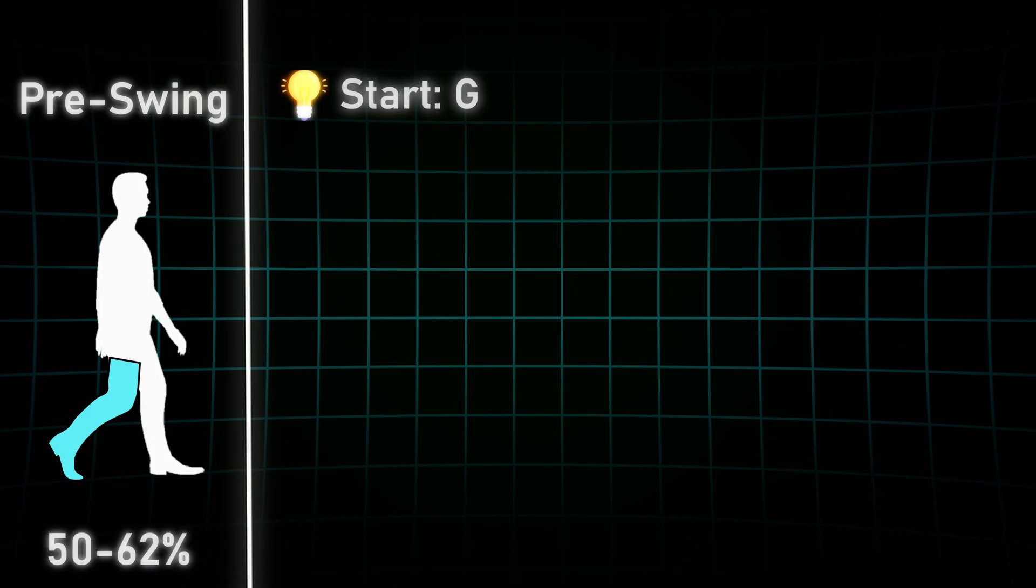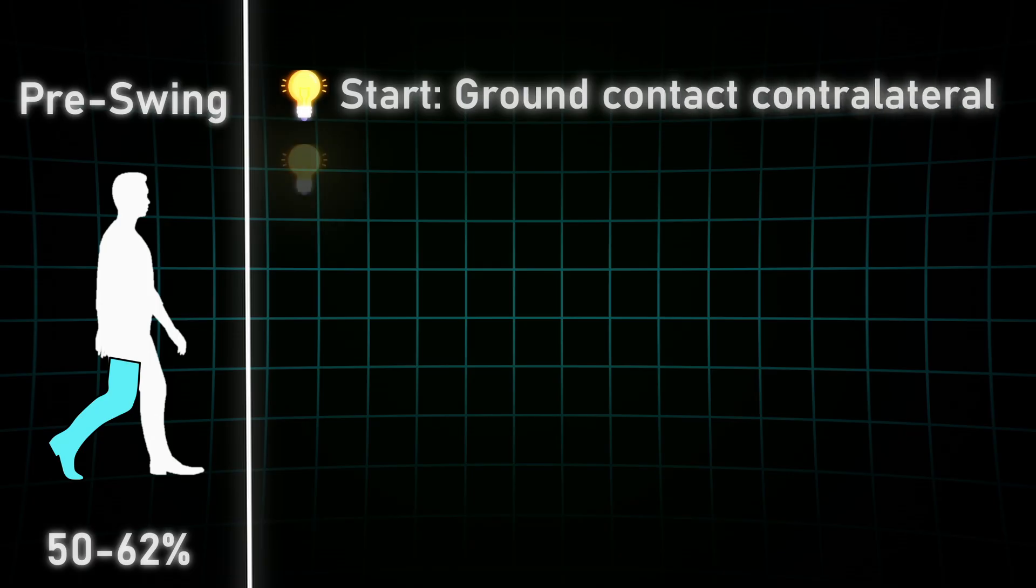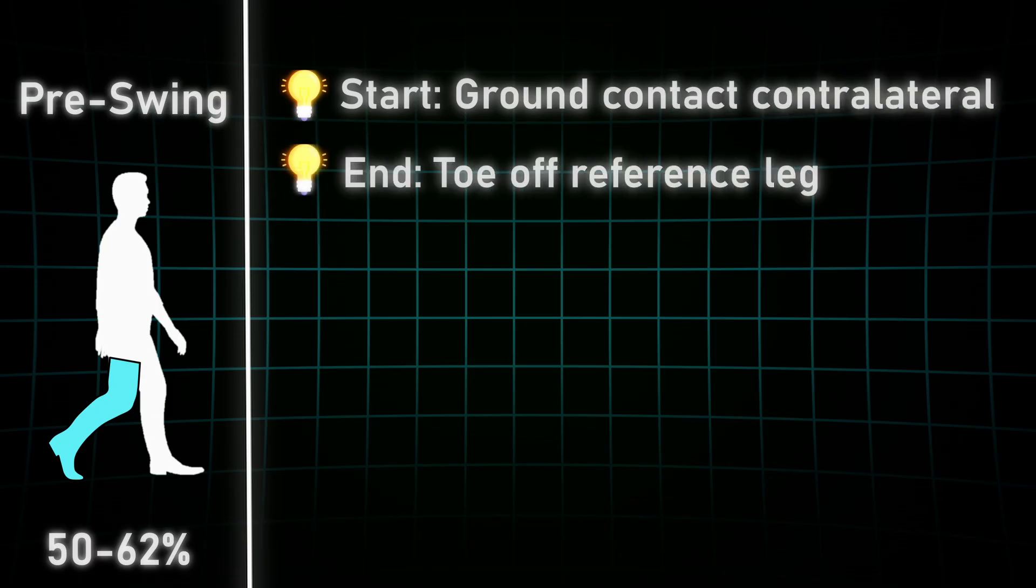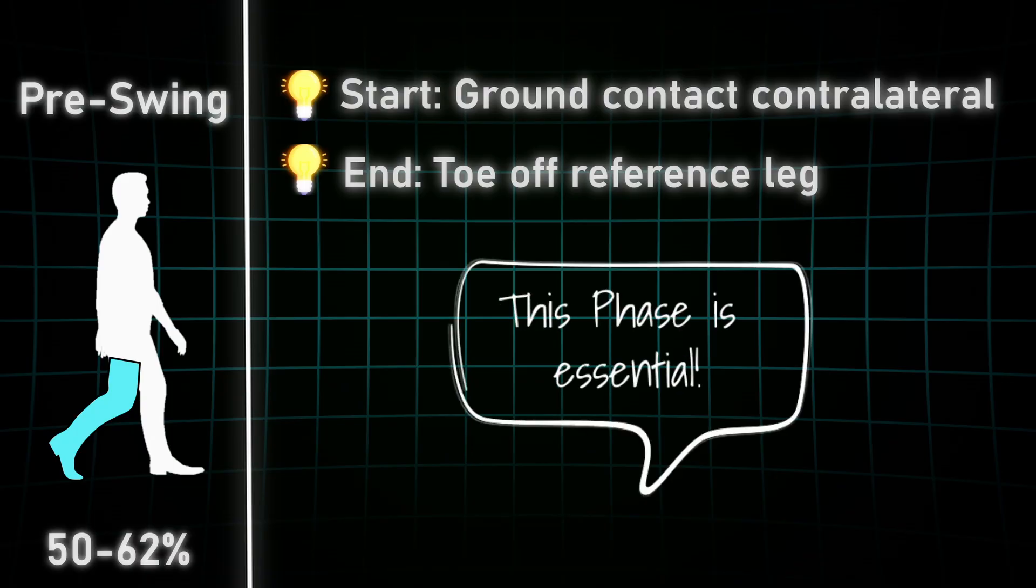Now, the pre-swing phase. It starts at the initial contact of the contralateral leg and it ends when the foot of the reference leg loses ground contact. This phase might not look like much, but a lot is happening here, which we can further use to treat patients even better.